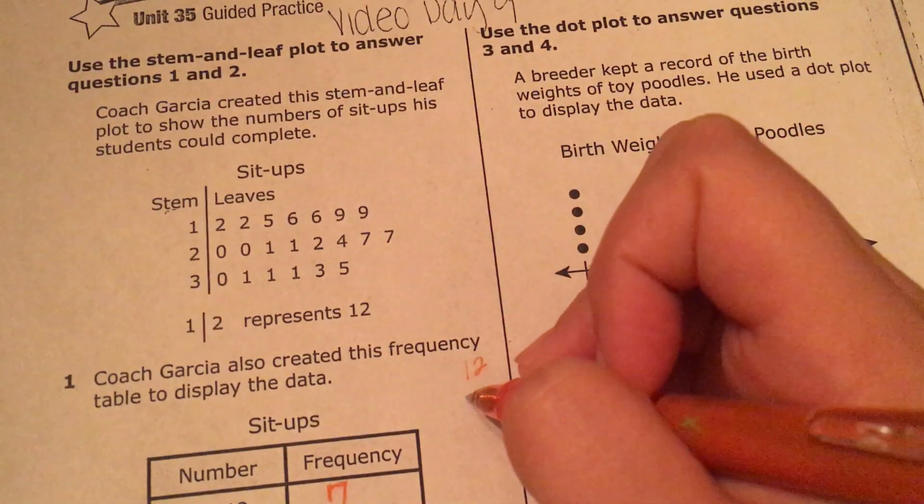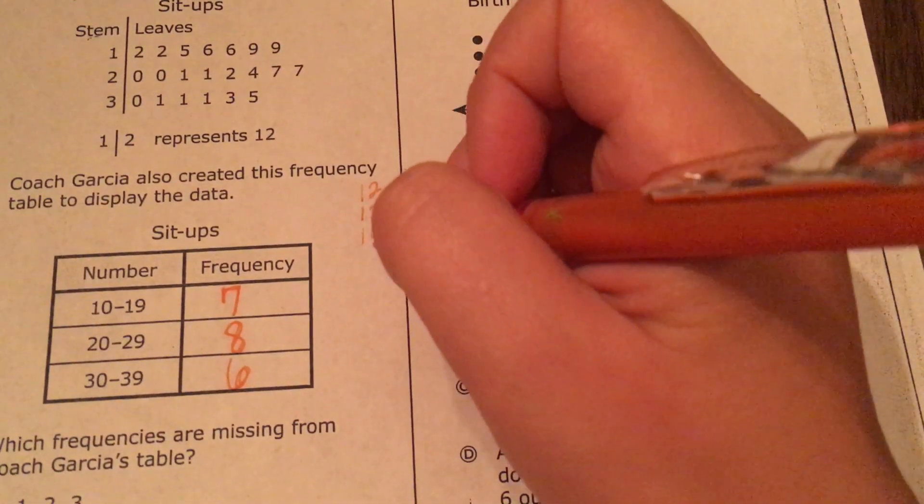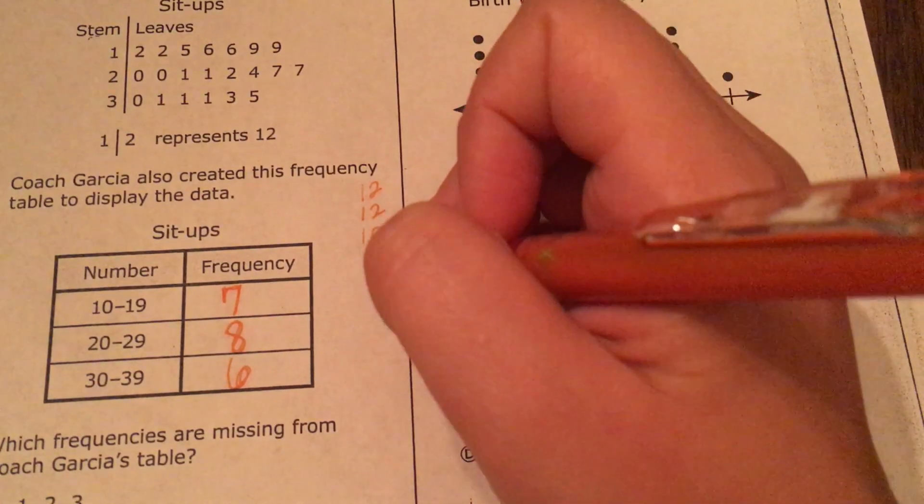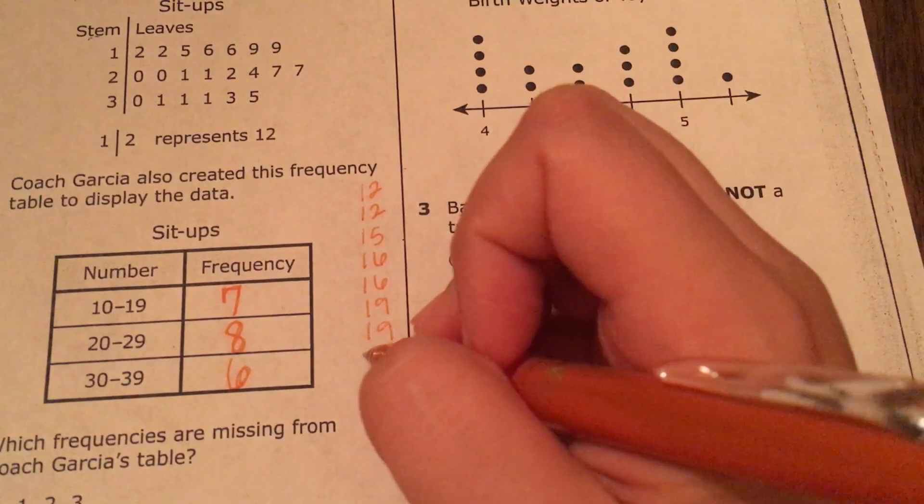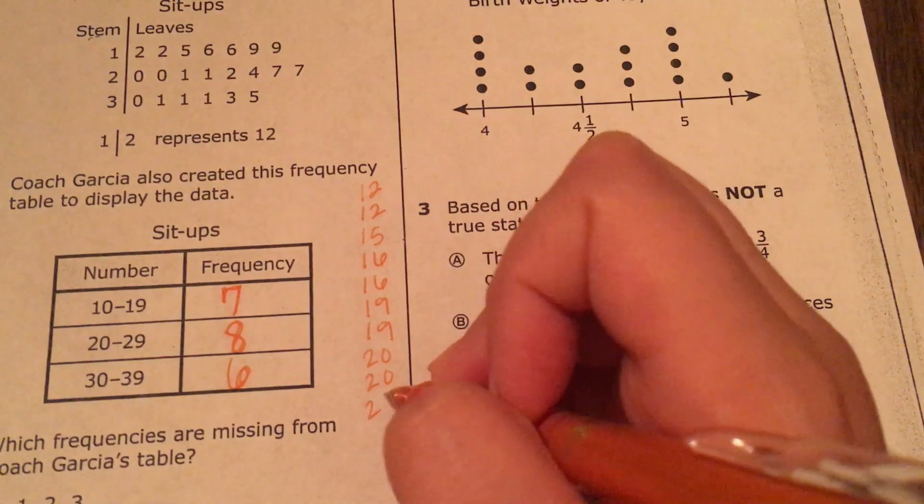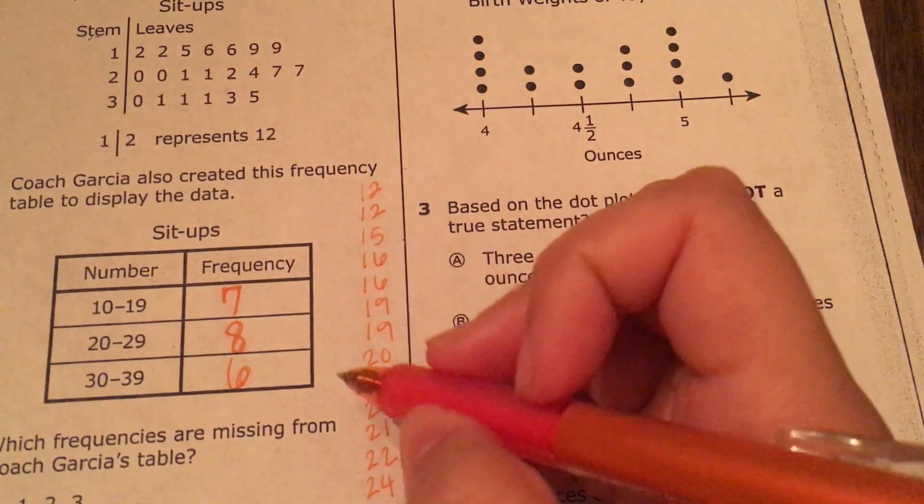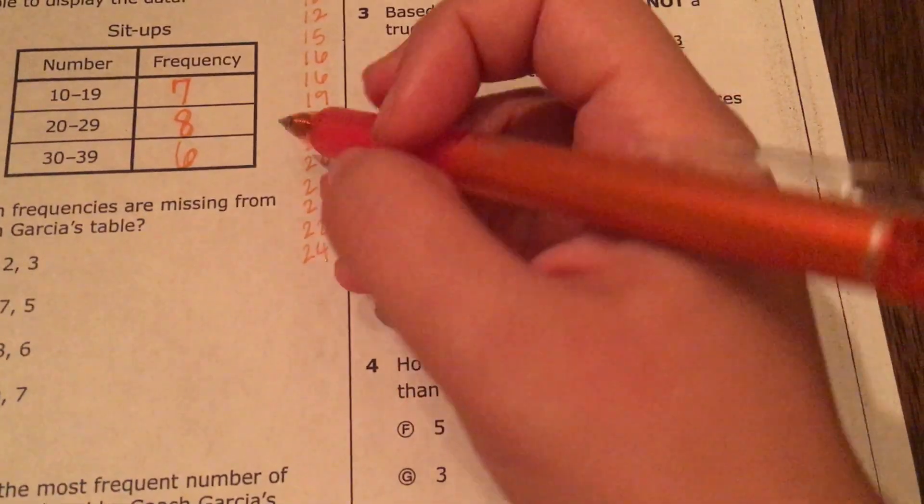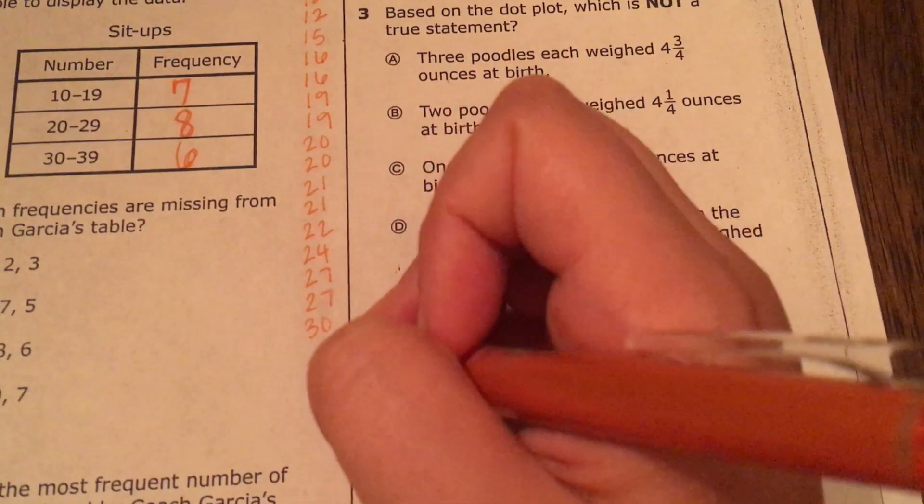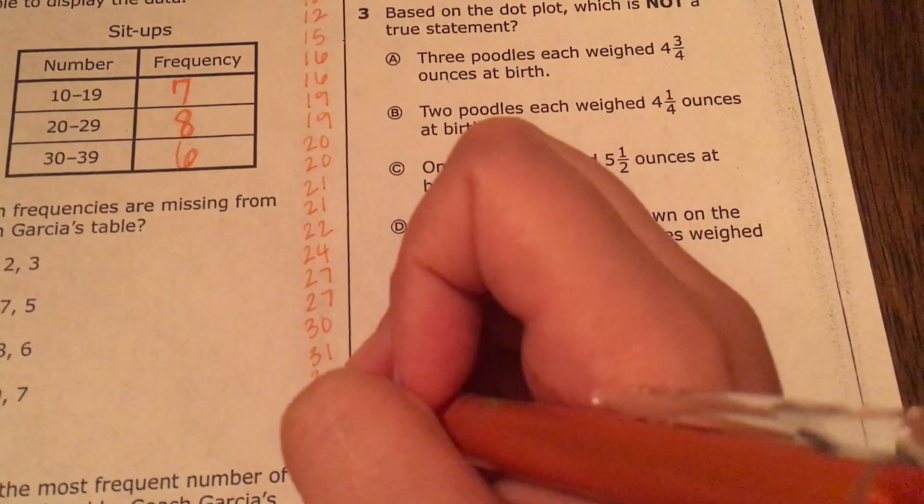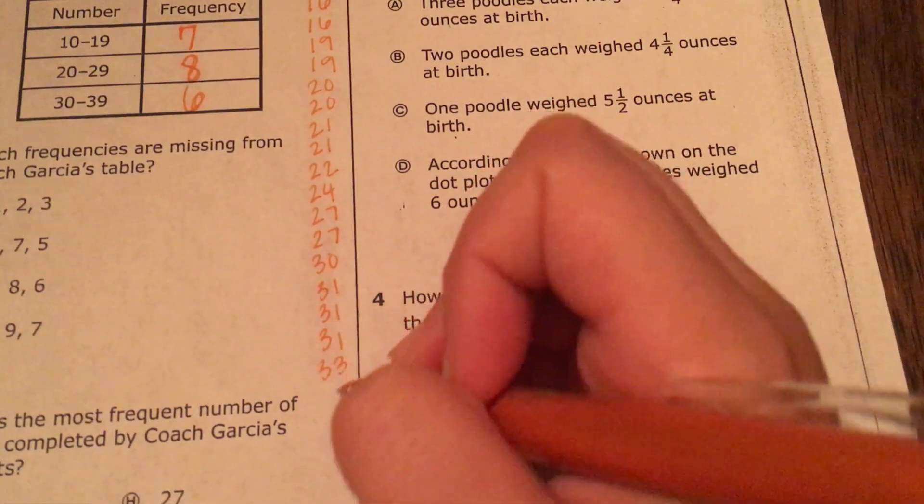So, 12, 12, 15, 16, 16, 16, 19, 19, 20, 20, 21, 21, 22, 24, 27, 27, 30, 31, 31, 31, 33, and 35.